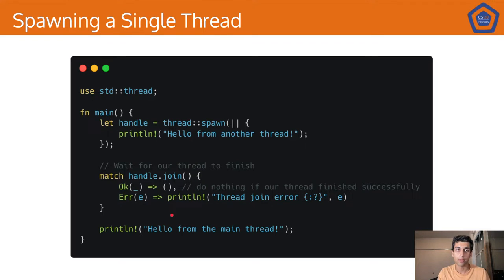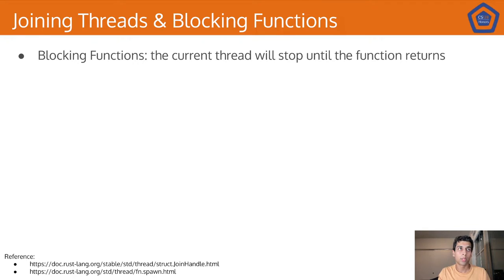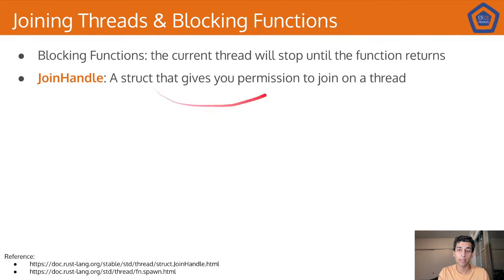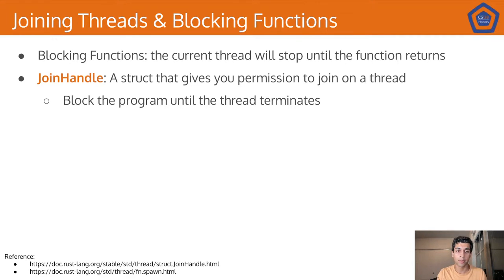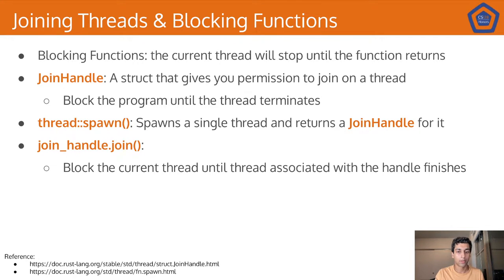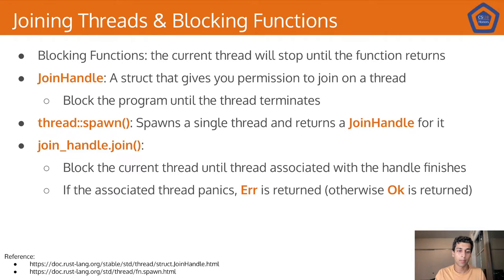Briefly reviewing a couple of concepts from last time: blocking functions stop the current thread until that function returns. In the thread::spawn example, join is a blocking function — it blocks the main thread while the other thread is running. The join handle is a struct that gives you permission to join a thread. You call join on the join handle and it blocks the program until the thread terminates. You get the join handle from thread::spawn. If the thread panics, you get an error on join; otherwise you get Ok after the function finishes blocking.